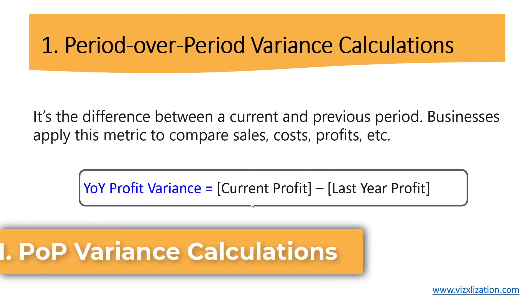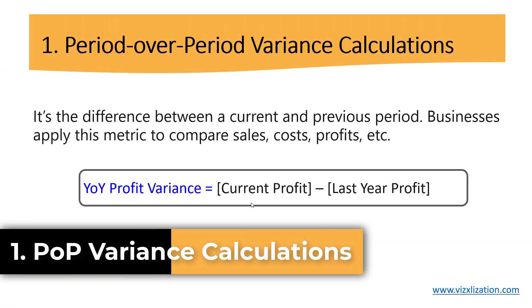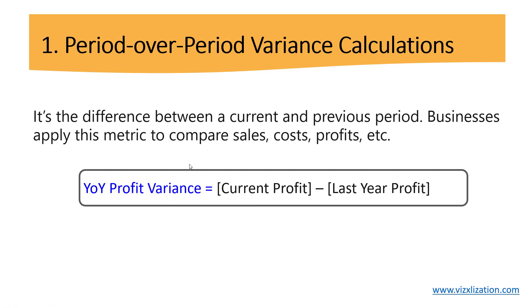So what are period over period variance calculations in Power BI? If you've been using Power BI for a while you might have used this metric. Basically, this is the difference between a current and previous period. Businesses apply this to compare sales, costs, or profits. For example, year over year profit variance is simply current period profit minus last year profit.